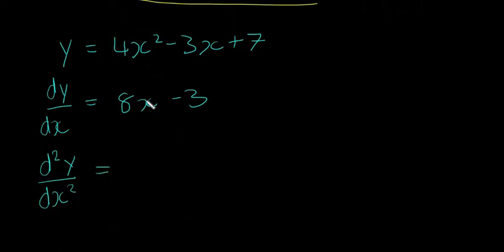And then it's the same rules as before. So it's not like there's a different rule for second derivatives or double derivatives. You just differentiate it again. So if you differentiate 8x, it will go to 8. And then the minus 3 will go to 0. So d²y dx squared is just equal to 8.